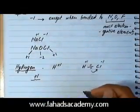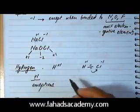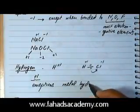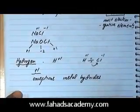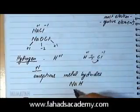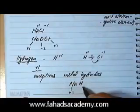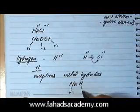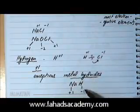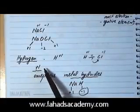There are a few exceptions with hydrogen as well. One exception is metal hydrides — for example, sodium hydride. In sodium hydride, sodium loses an electron forming +1 whereas hydrogen gains an electron forming minus one. So in metal hydrides, hydrogen has an oxidation state of minus one instead of the more common plus one.